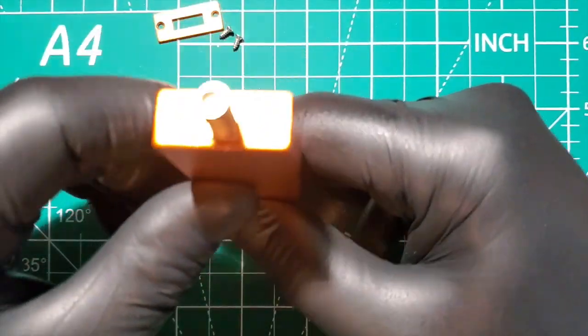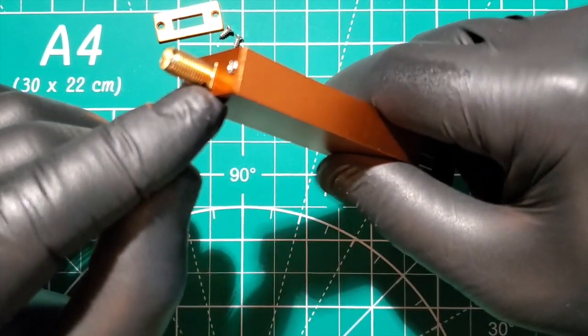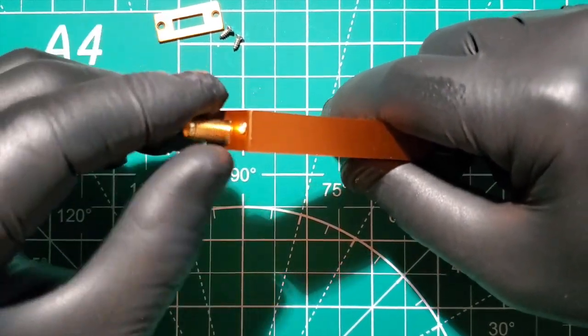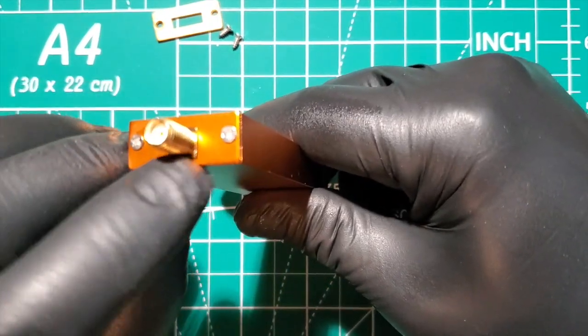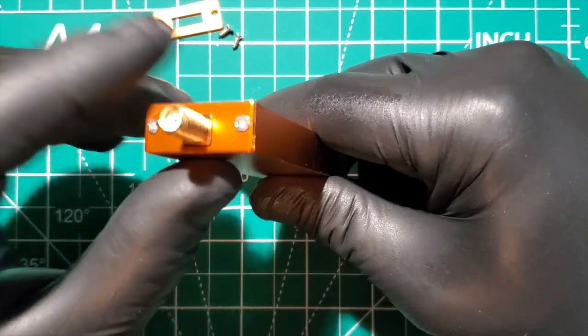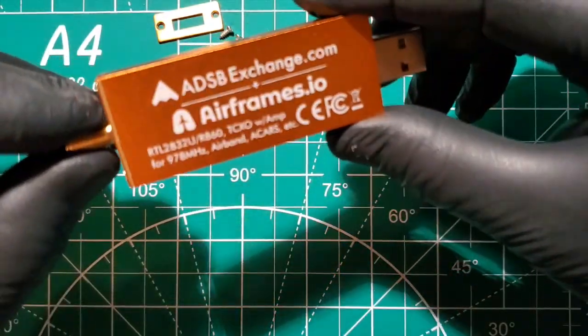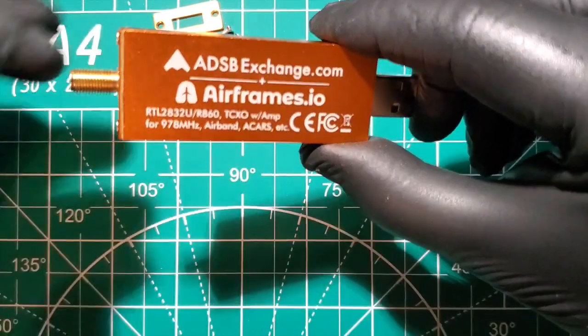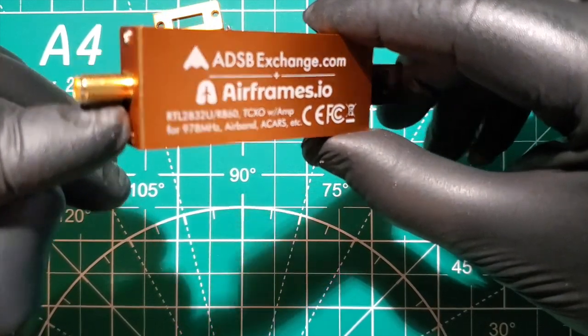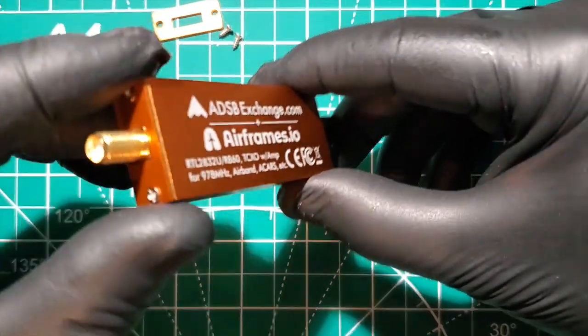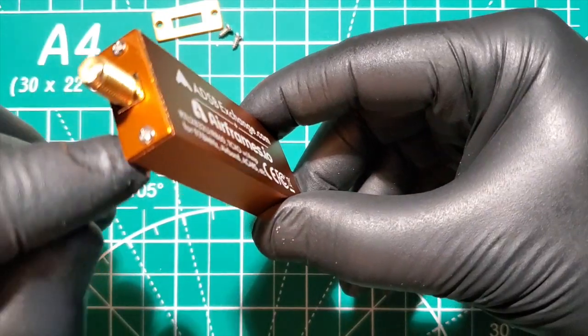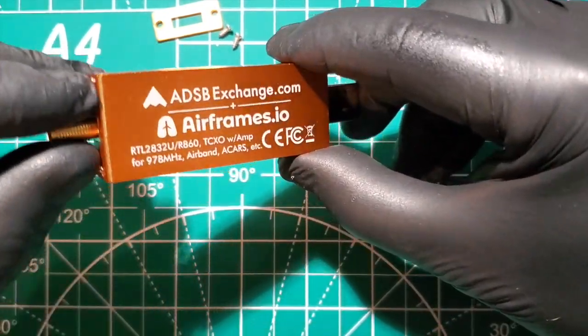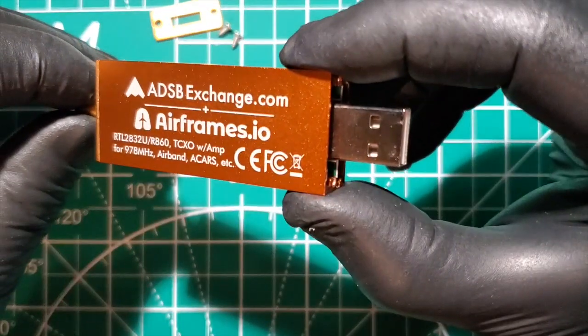And now on this side, it doesn't have a washer or a nut because it's a square SMA bulkhead. But I guess you could add a washer and a nut if you can get one that will kind of seal up to the case.